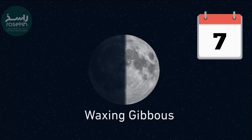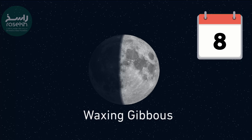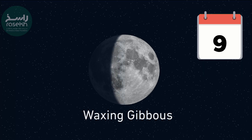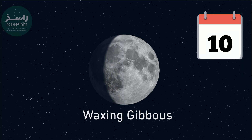Waxing Gibbous: After the first quarter phase, the illuminated portion continues growing into a gibbous shape, appearing more than half illuminated.